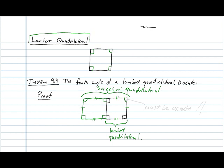And now Theorem 9.8 says that the summit angles of our Saccheri quadrilateral are acute and congruent to one another, which means that our fourth angle in the Lambert quadrilateral must be acute as well.